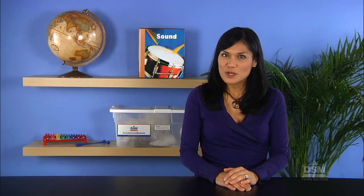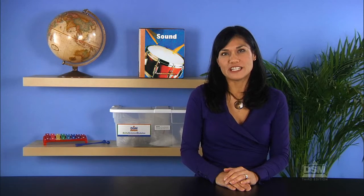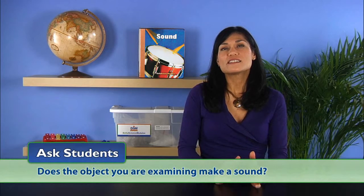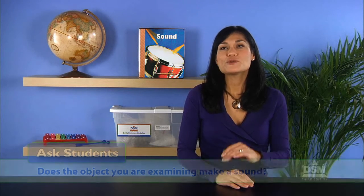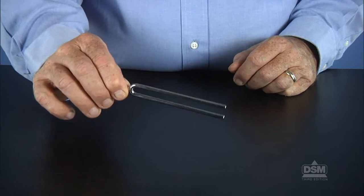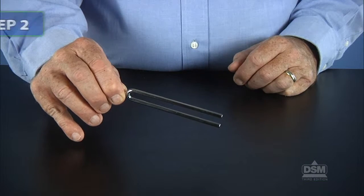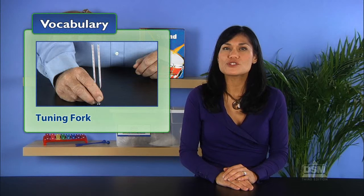Without saying what it is, give a tuning fork to each team. Instruct students to examine the tuning fork carefully. Then ask, does the object you are examining make a sound? Answers will depend on whether or not the students struck it against another object. Identify the object as a tuning fork, an instrument that gives a fixed tone when struck.